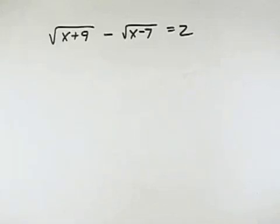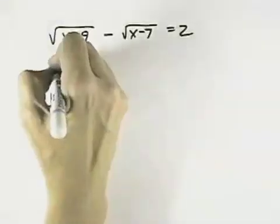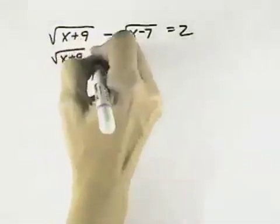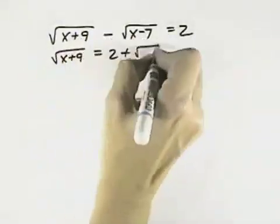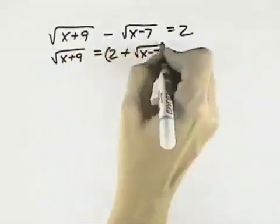I want to solve this radical equation. To do that, I can only get rid of one radical at a time. So I'm going to isolate one radical. I'll isolate the x plus 9 under the square root symbol by putting the square root of x minus 7 on the other side.